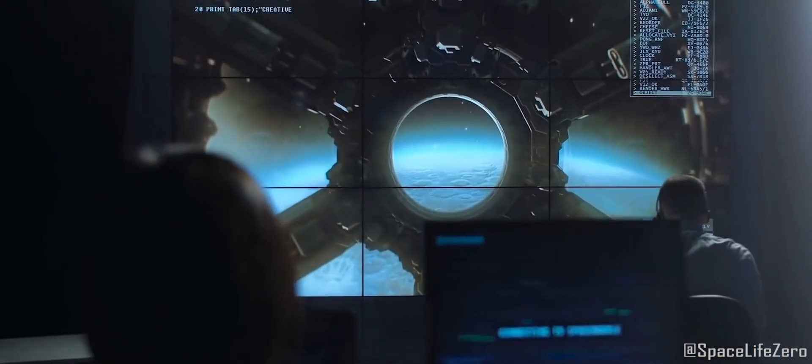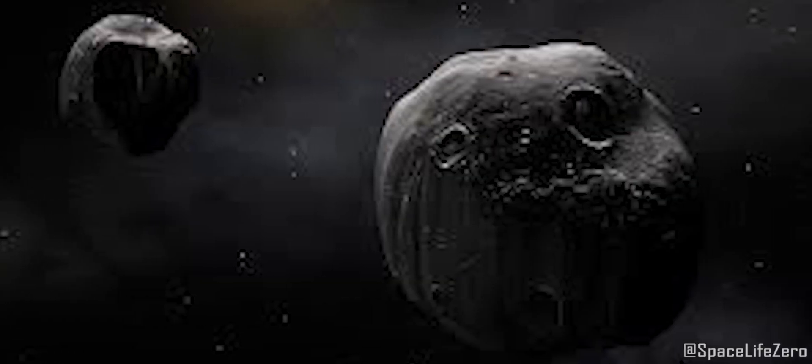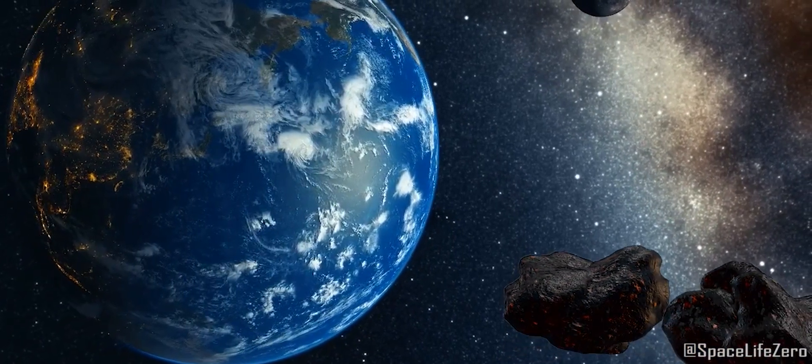As per the information received from NASA's Jet Propulsion Laboratory, two asteroids are hurtling at high speed towards Earth on September 30, 2023.